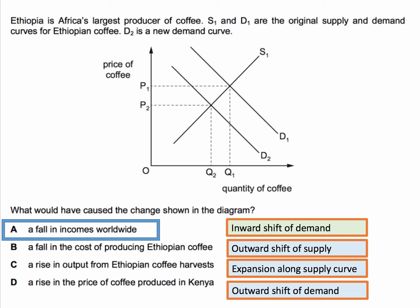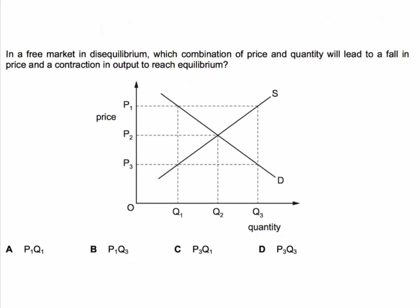Let's have a go at a second question. In a free market in disequilibrium, which combination of price and quantity will lead to a fall in price and a contraction in output to reach the equilibrium? Press the pause button and have a go — I'll be back in a few seconds with the right answer and the explanation.